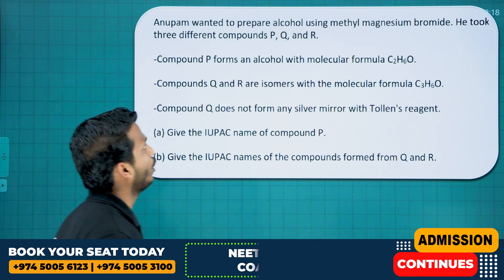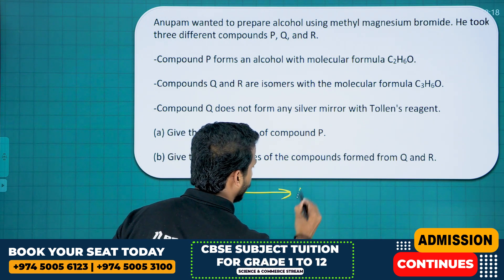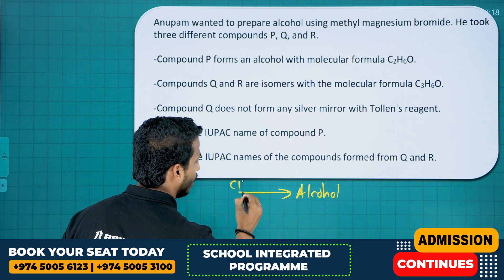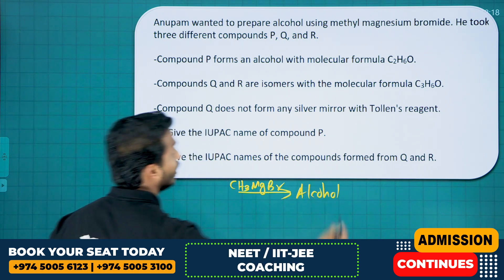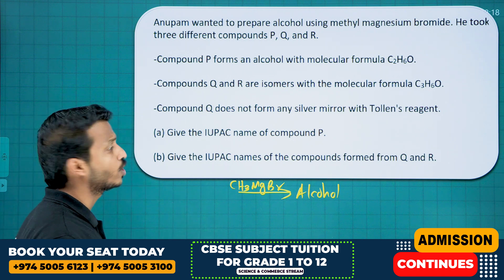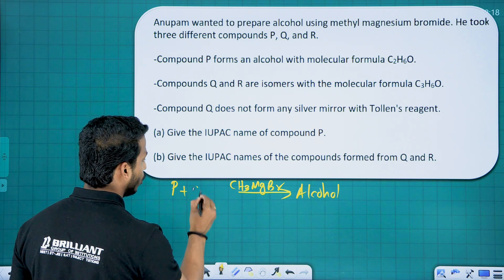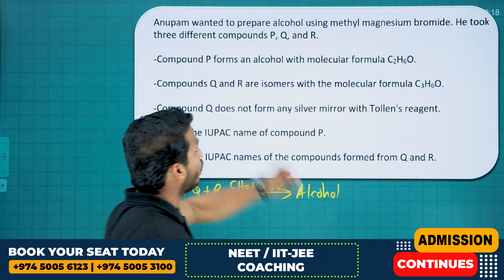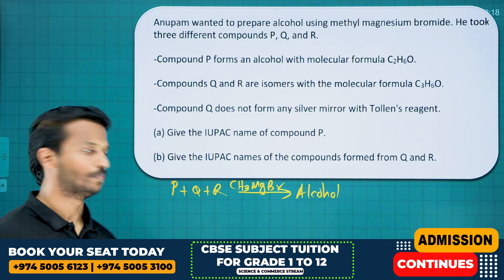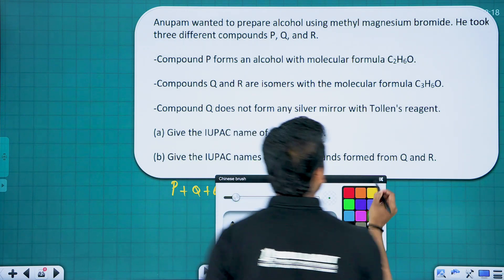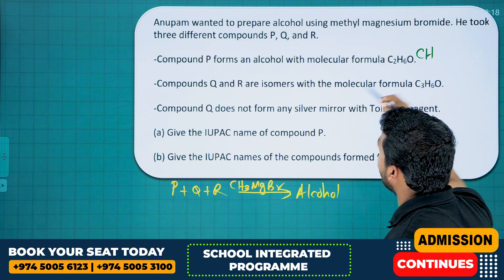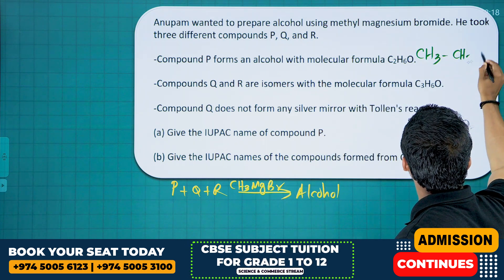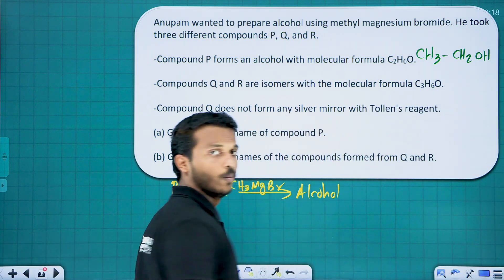Next: Anupam wanted to prepare alcohol using methyl magnesium bromide — that's our Grignard reagent. He took three different compounds P, Q, and R. Compound P forms an alcohol with molecular formula C2H6O, which is CH3CH2OH — ethanol. Ethanol is a primary alcohol.